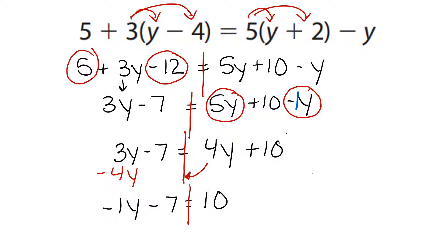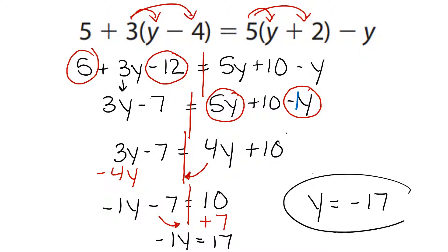Now my like terms are 7 and 10. Because 7 and 10 are on opposite sides, we do the opposite operation. So instead of a minus 7, we do a plus 7. Negative 1y is going to equal 17. 10 plus 7 is 17. And then our last step is to divide — 17 divided by the negative 1 gives us y equals negative 17.